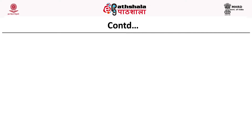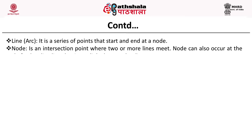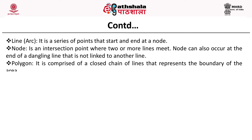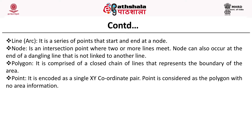A line or arc is a series of points that start and end at a node. A node is an intersection point where two or more lines meet, and can also occur at the end of a dangling line not linked to another line. A polygon is comprised of a closed chain of lines representing the boundary of the area. A point is encoded as a single x-y coordinate pair and is considered a polygon with no area information.